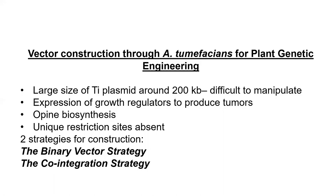How can we use this system for our own benefit? This represents a perfect example of making transgenic plants in dicots. There are a few problems with using the Ti plasmid in genetic engineering. Number one is the size of the Ti plasmid — it is around 200 kb, which is a huge size for a plasmid. The other problem is the expression of growth regulators to produce tumors: inside the T-DNA there are genes for auxins and cytokinins.